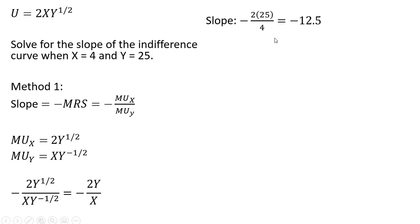The next step is to plug in our values for y and x. Y is 25 and x is 4, and we get a slope of minus 12.5. So on the indifference curve where x equals 4 and y equals 25, the slope is minus 12.5.